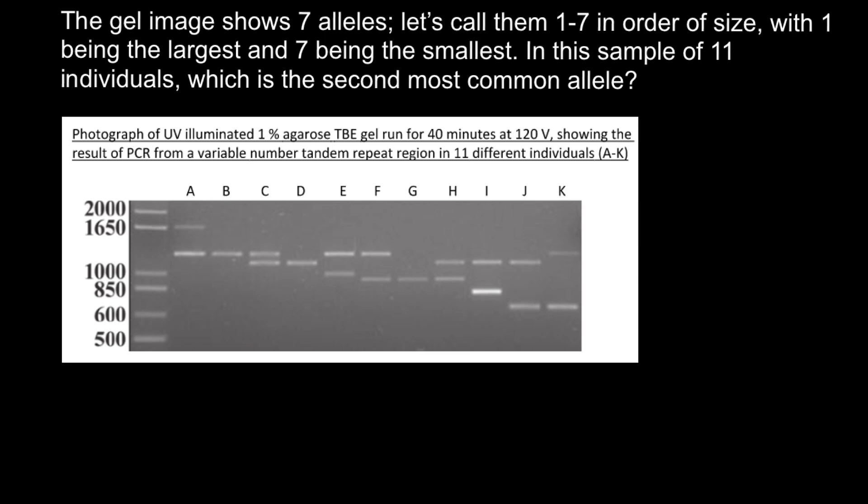The gel image shows seven alleles. Let's call them one through seven in order of size, with one being the largest and seven being the smallest. In this sample of 11 individuals, which is the second most common allele?